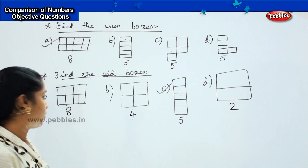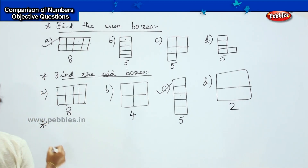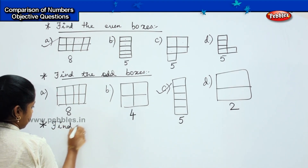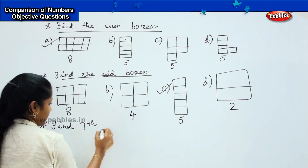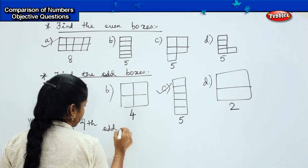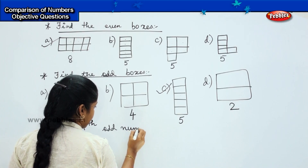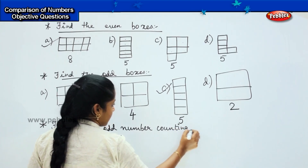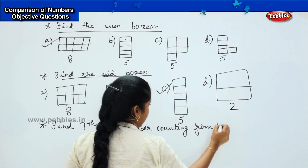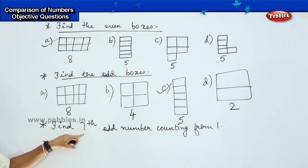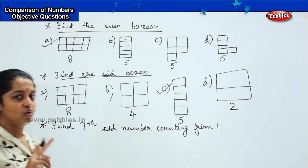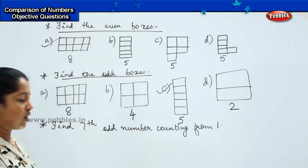Shall we move to the next question? So here is my next question. You have to find the seventh odd number counting from 1. Remember, it is the seventh odd number, so you don't have to count it in a consecutive way. You will keep the even numbers aside and count only the odd numbers.